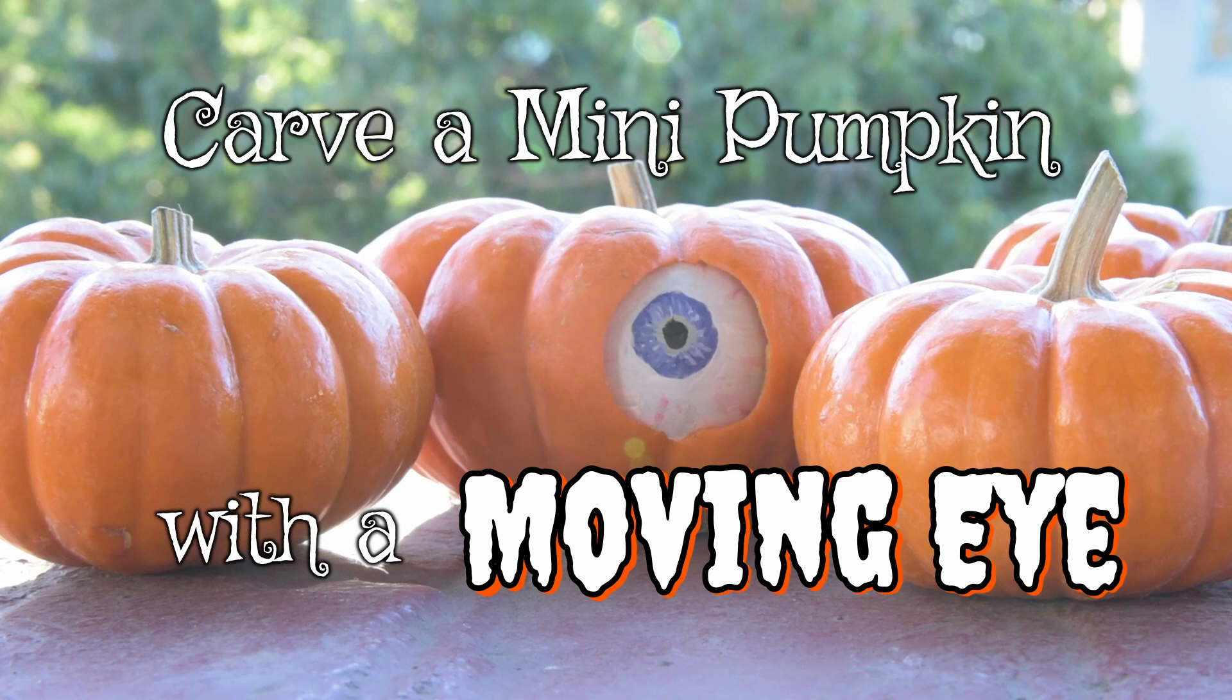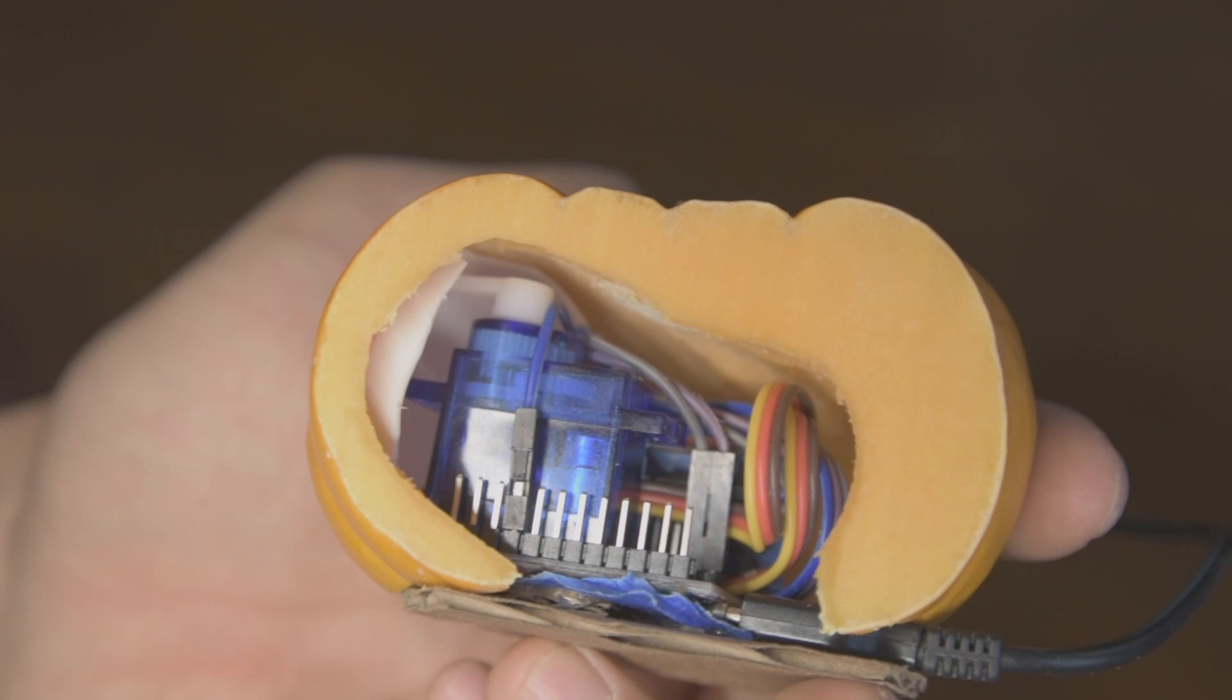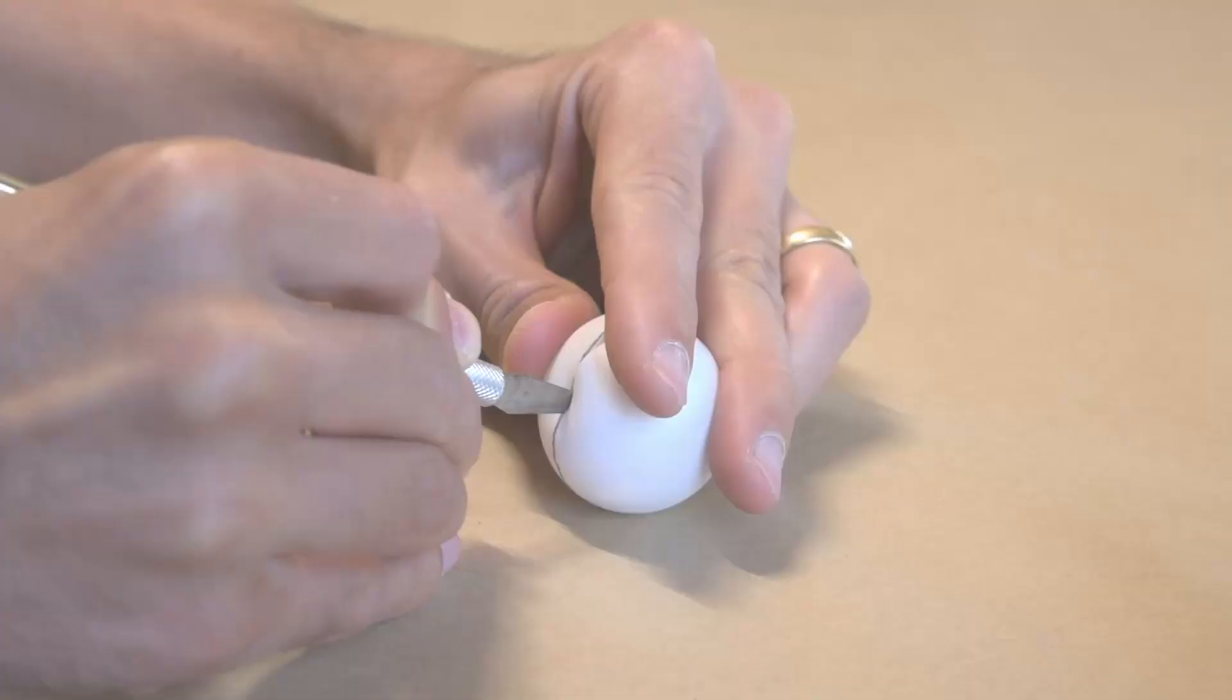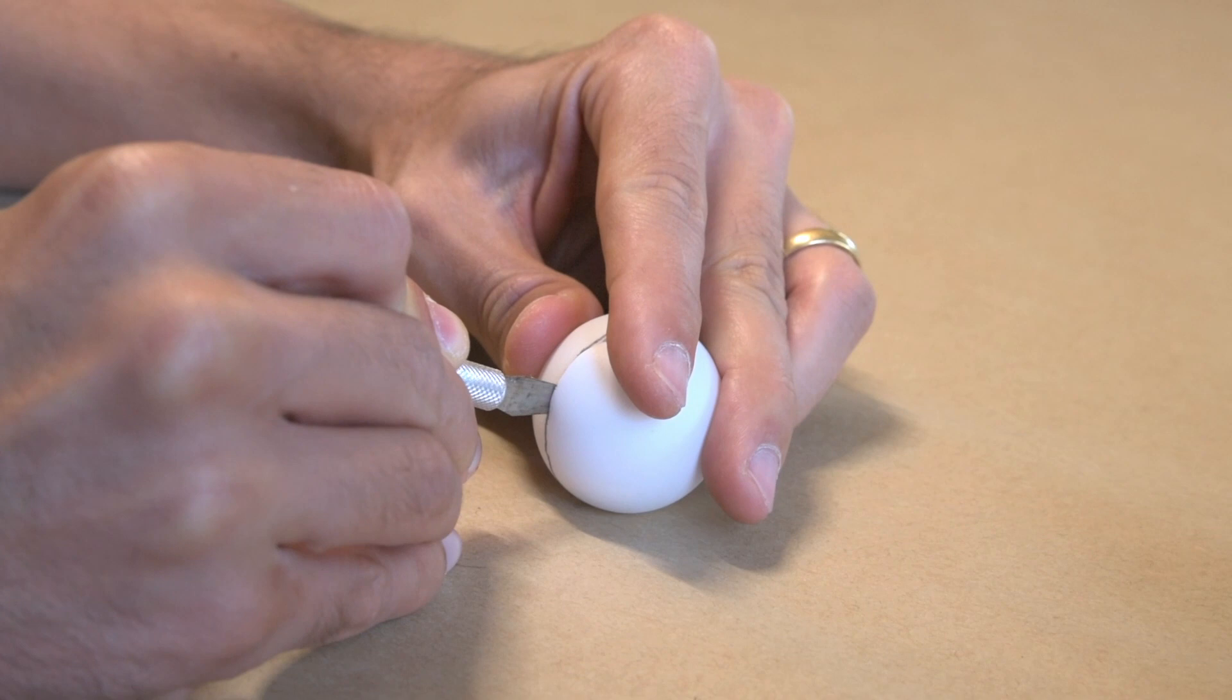This mini pumpkin with a moving eye is the perfect DIY Halloween decoration for makers. Inside it's pretty straightforward. The eyeball is a painted ping pong ball connected to a 9g servo motor and an Arduino Pro Micro. Let's go step by step so you can build one too.